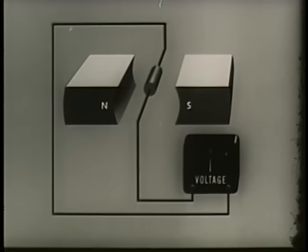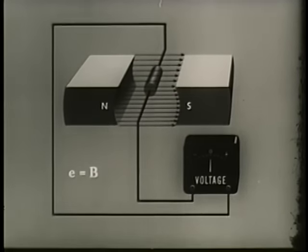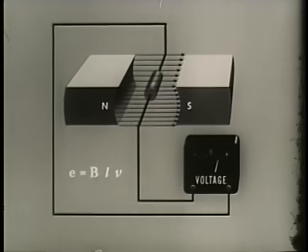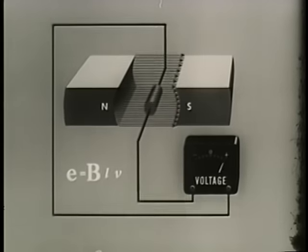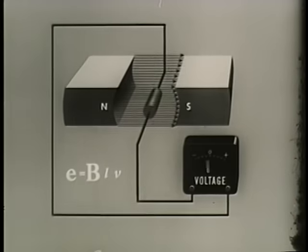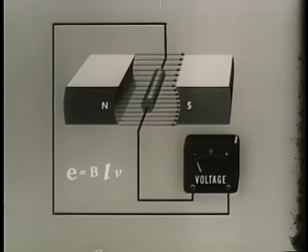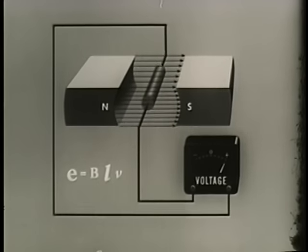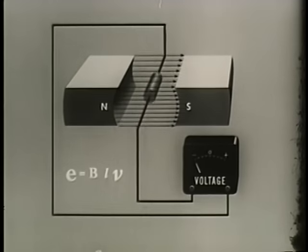The instantaneous EMF E equals B, the strength of the field, times L, the length of the conductor cutting lines of force, times V, the velocity of the conductor. An increase in the number of lines of force, or the strength of the field, increases the instantaneous EMF in the conductor. Increases in the length of the conductor cutting lines also increases the EMF. And finally, the greater the velocity of the conductor, the greater the EMF.